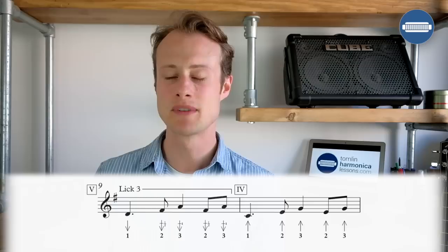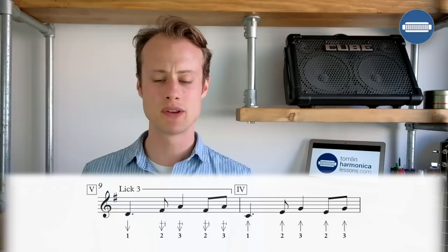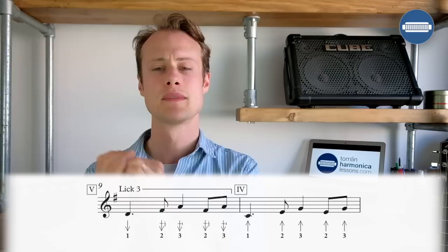So the five chord is going to be a little bit trickier because we've got some bends, but they're really useful to learn. So we've got one draw on beat one, and then we're going to go to the two-draw half-step bend, three-draw whole-step bend, then two-draw half-step bend, three-draw whole-step bend. Okay, so let's try that together nice and slowly. We'll just play that once. So one, two, three, four.